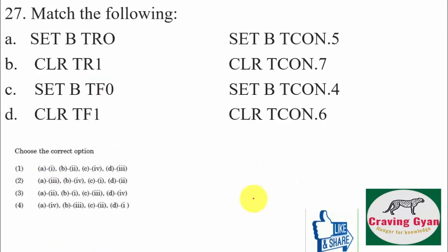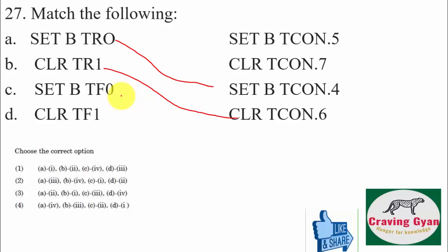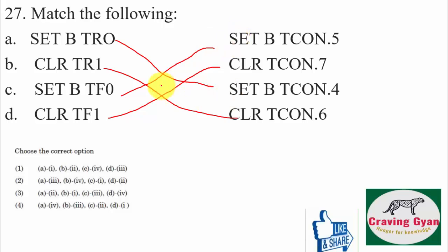Twenty-seventh question — match the following for 8051 TCON register: Set TR0 corresponds to set TCON.4; Clear TR1 corresponds to clear TCON.6; Set TF0 corresponds to set TCON.5; Clear TF1 corresponds to clear TCON.7. Set and set correspond to set and set on the other side; clear and clear correspond to clear and clear. Hence option number 2 is correct.